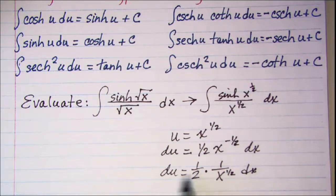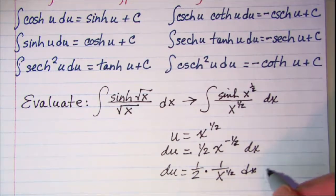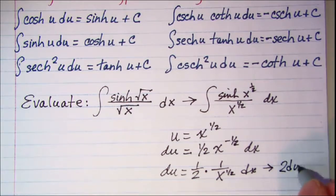So I need to multiply both sides by 2 and I can see then that 2 du is equal to dx over x to the one-half.